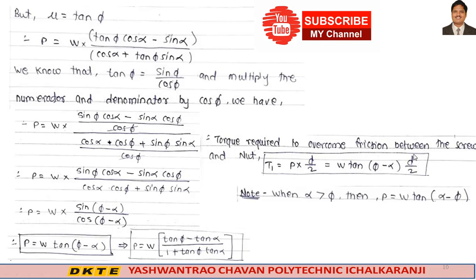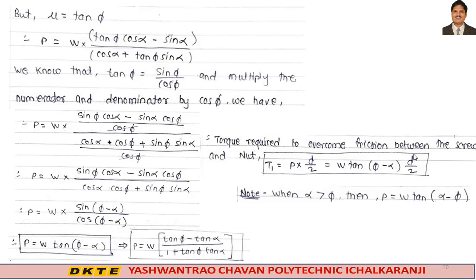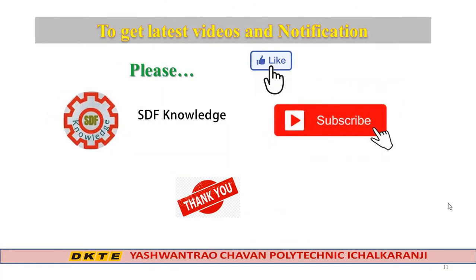Note: when alpha is greater than phi, P becomes negative, meaning P equals W·tan(alpha minus phi). This is the torque required to raise or lower the load in the square threaded screw. Thank you friends.